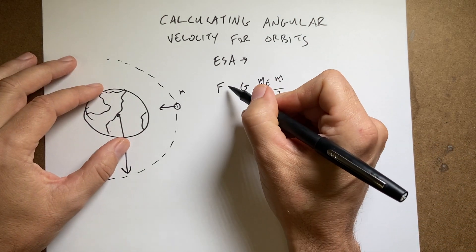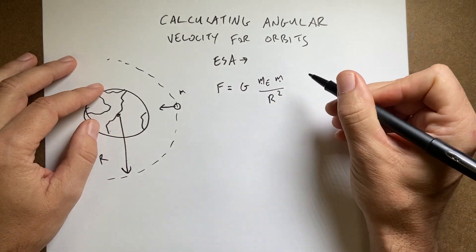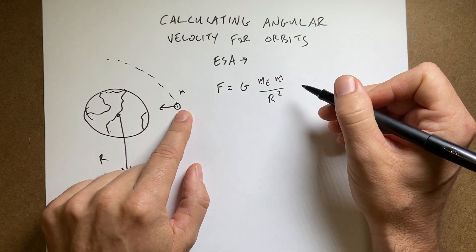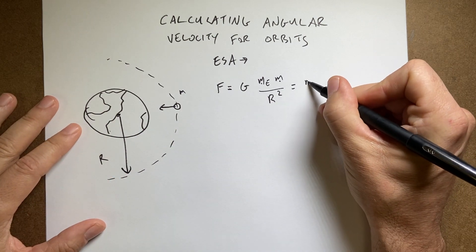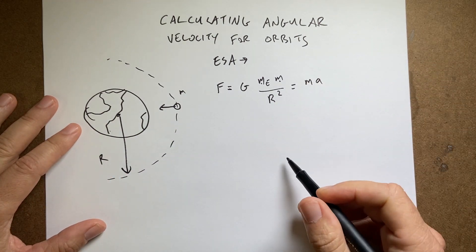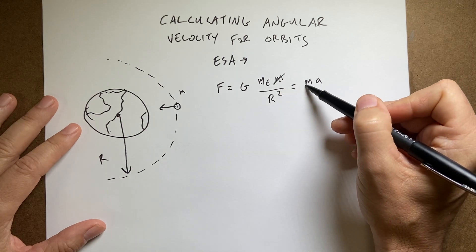So what do forces do? Well, they change the motion of an object. So in one dimension, since there's only one force, this would have to be equal to mass times acceleration. And right away you see the mass of the spacecraft cancels.